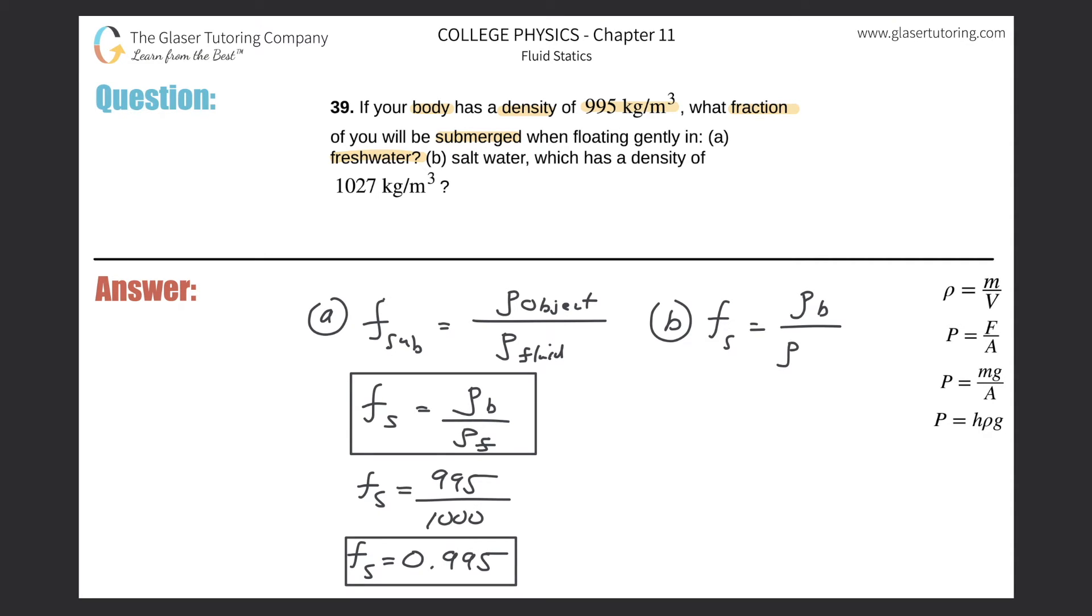The fraction submerged now is going to be 995 kilograms per cubic meter divided by 1027 kilograms per cubic meter. The fraction submerged is now 995 divided by 1027, and we get a fraction of 0.969. That would be about 96.9 percent, so that's the fraction of your body that's submerged.